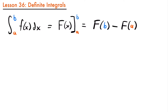Welcome back. Today we're going to be talking about how to solve basic definite integrals. We know from the fundamental theorem of calculus that if we have a definite integral of some function from a to b, that is equal to the antiderivative of that function evaluated from a to b. This is calculated by plugging b into the antiderivative, and then subtracting the value of a plugged into the antiderivative.